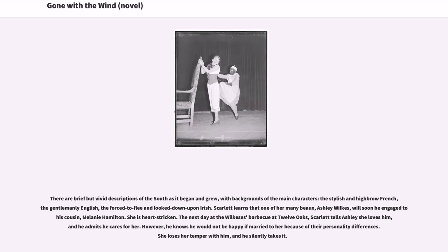All the talk is of the coming Civil War. There are brief but vivid descriptions of the South as it began and grew, with backgrounds of the main characters: the stylish and highbrow French, the gentlemanly English, the forced-to-flee and looked-down-upon Irish. Scarlett learns that one of her many beaus, Ashley Wilkes, will soon be engaged to his cousin, Melanie Hamilton.